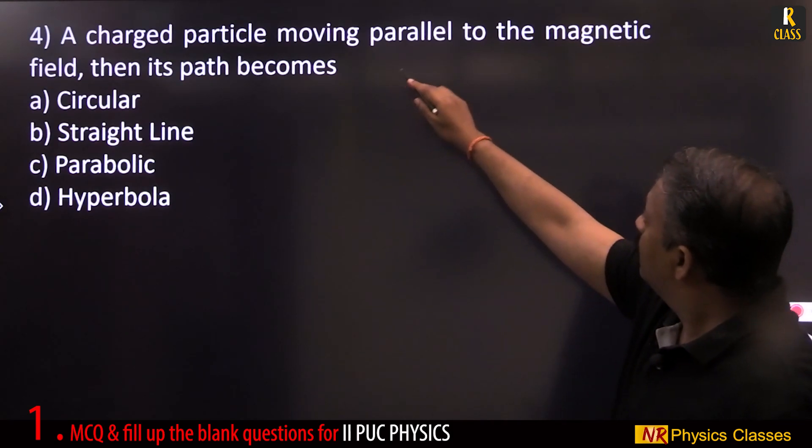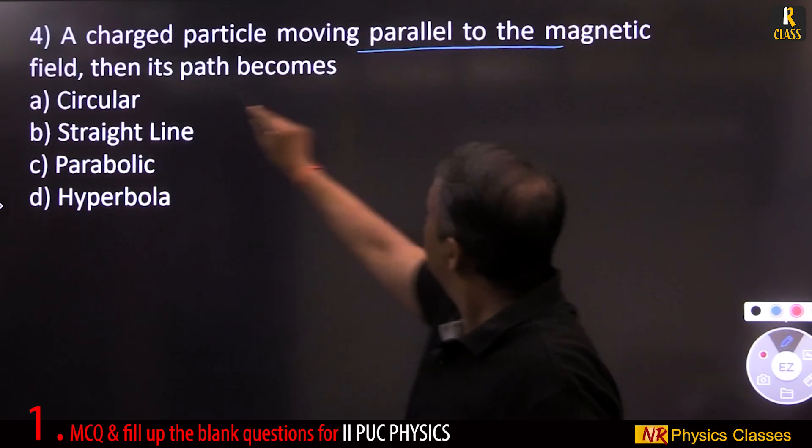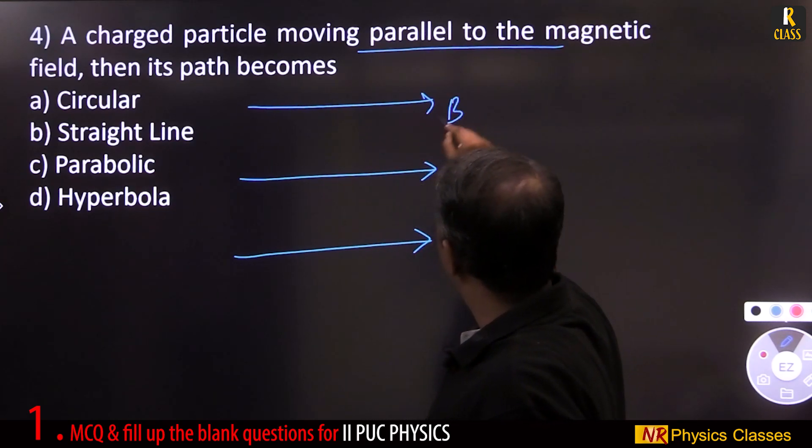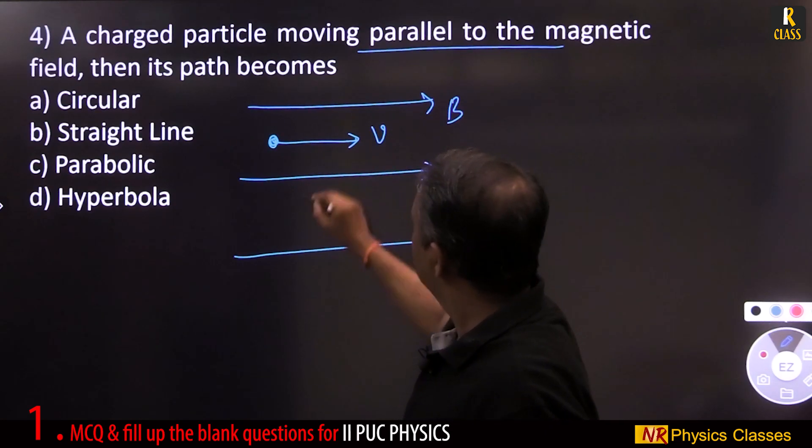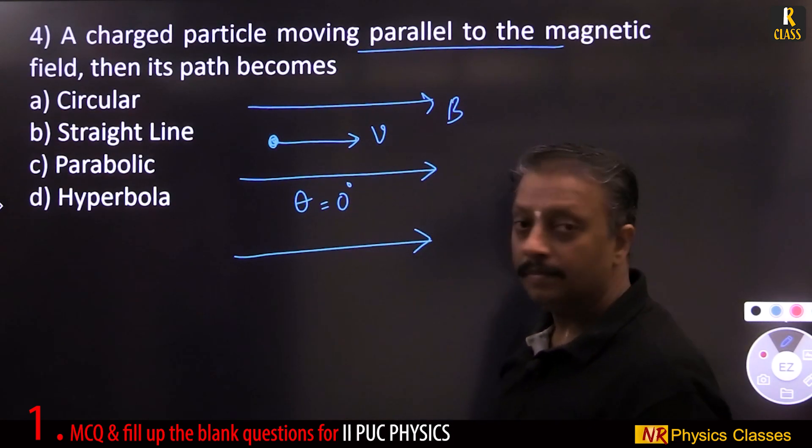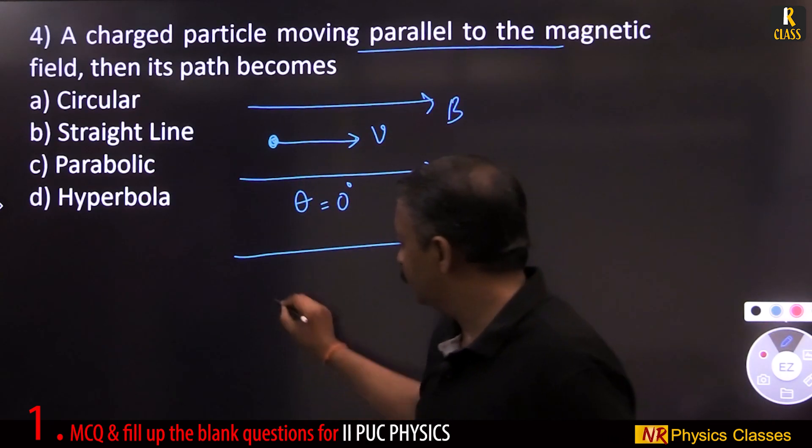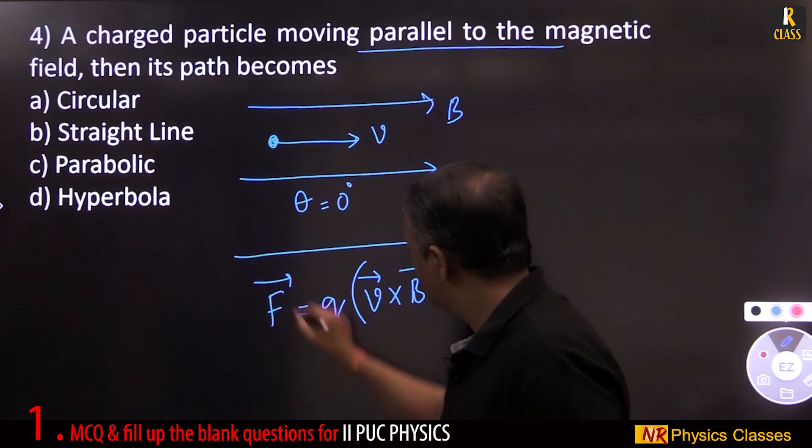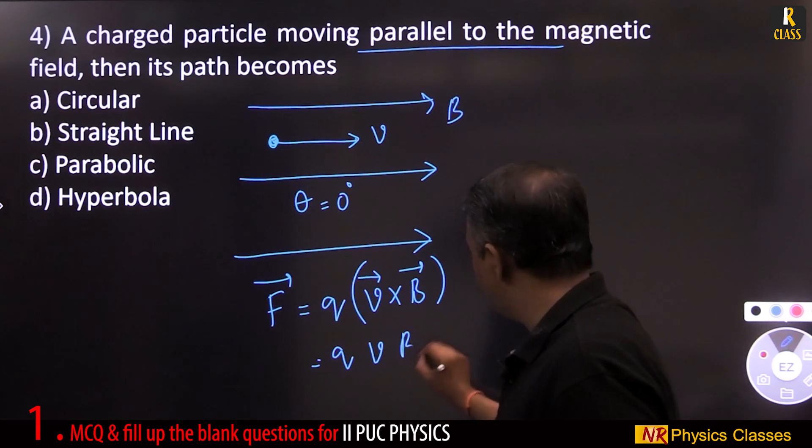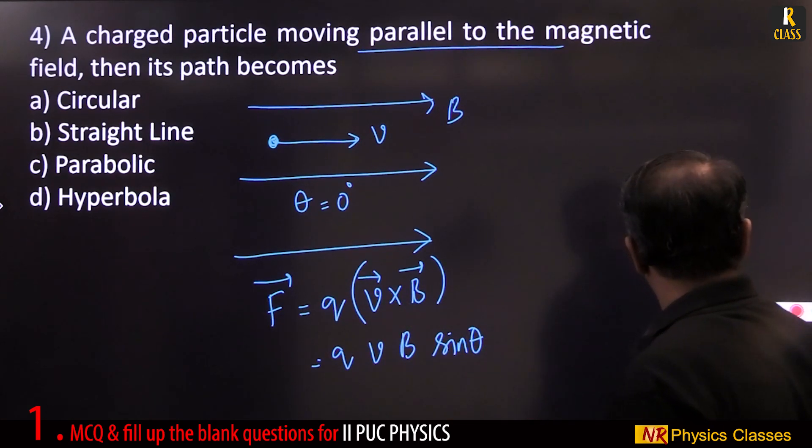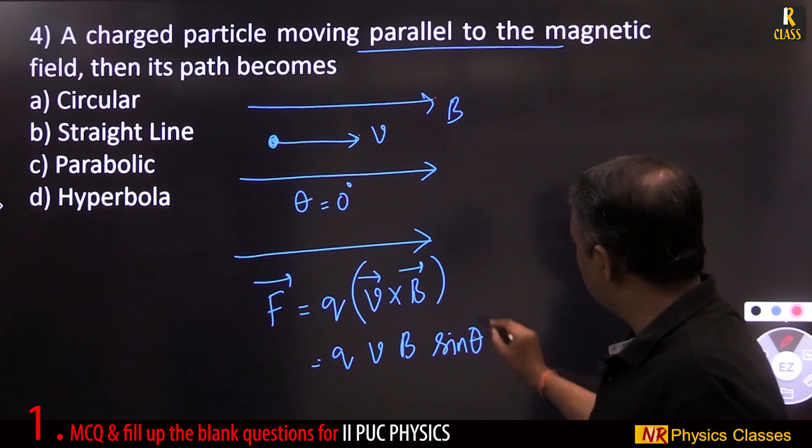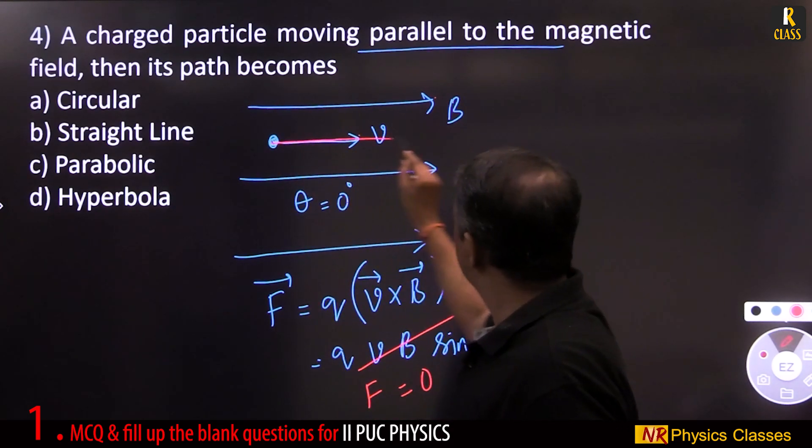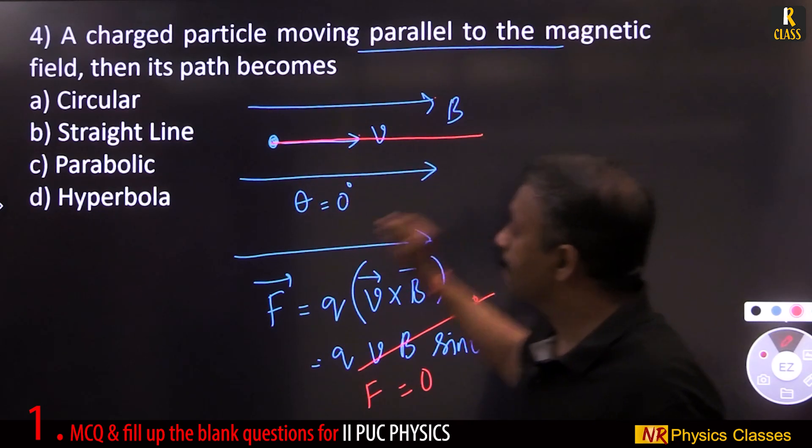A charged particle moving parallel to the magnetic field. This is the magnetic field. This is a charged particle moving parallel, so theta equal to 0 degree. Force on a moving charge: force equal to Q into V cross B, which is equal to VB sin theta. Angle between these two is 0, sin 0 is 0. So force equal to 0. There is no force means this particle continues to travel. It is a straight line.